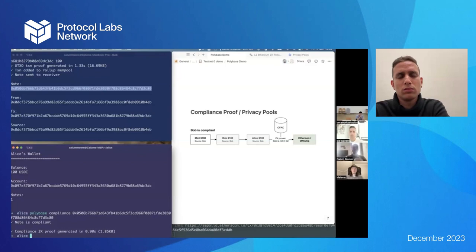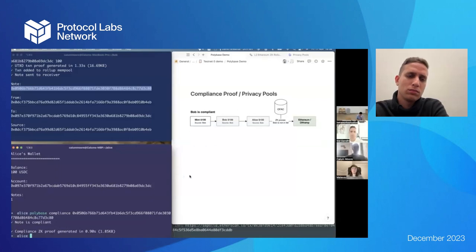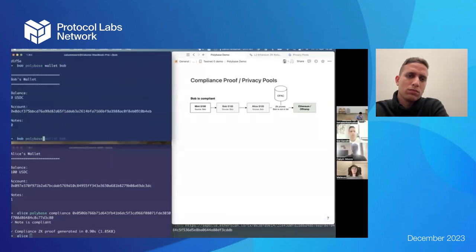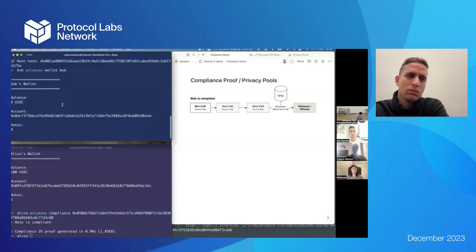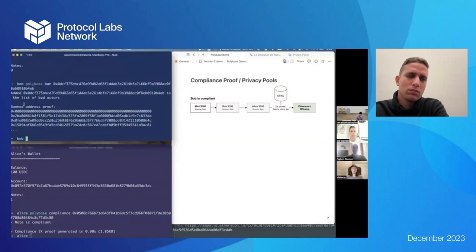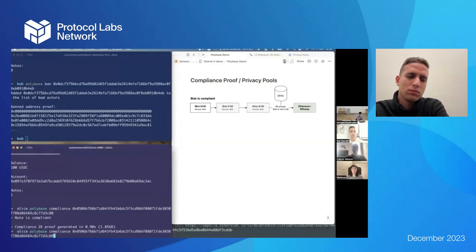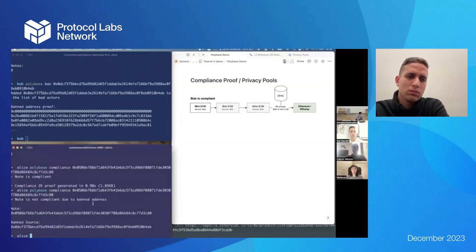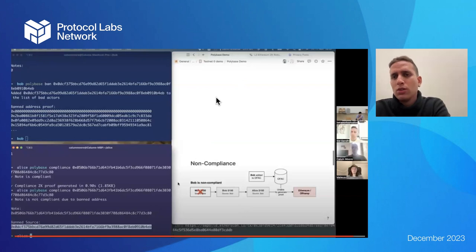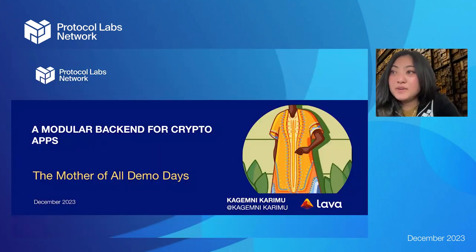We're hiding all the details and sharing the minimal information — 'this is a transaction that is allowed.' Now let's see what happens if Bob is actually a bad actor: I'm going to add Bob to the list and ban his address. Now this address has been banned — if Alice tries to create a ZK proof to prove her transaction is valid, she obviously can't, because the note is no longer compliant due to the banned source address.